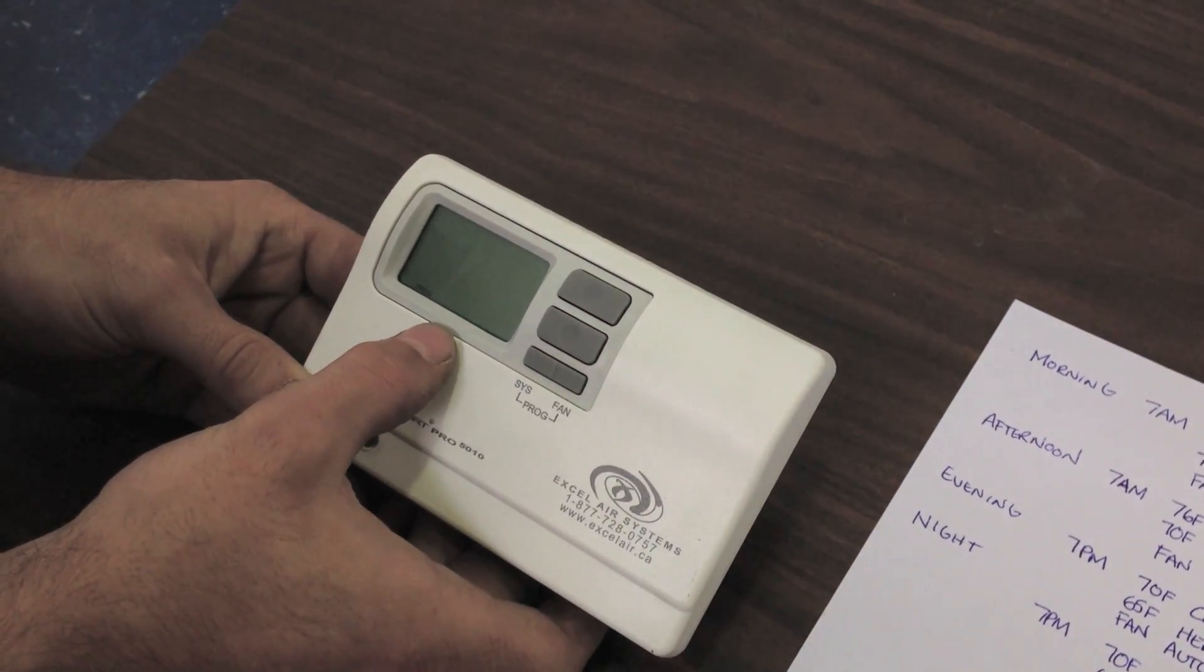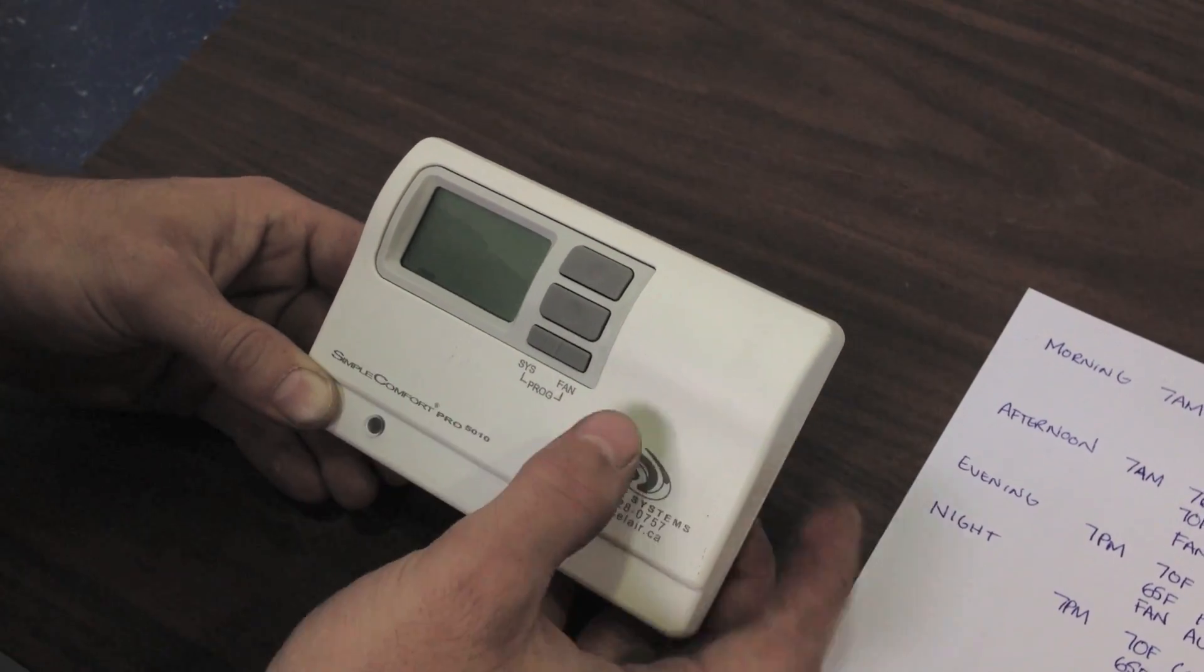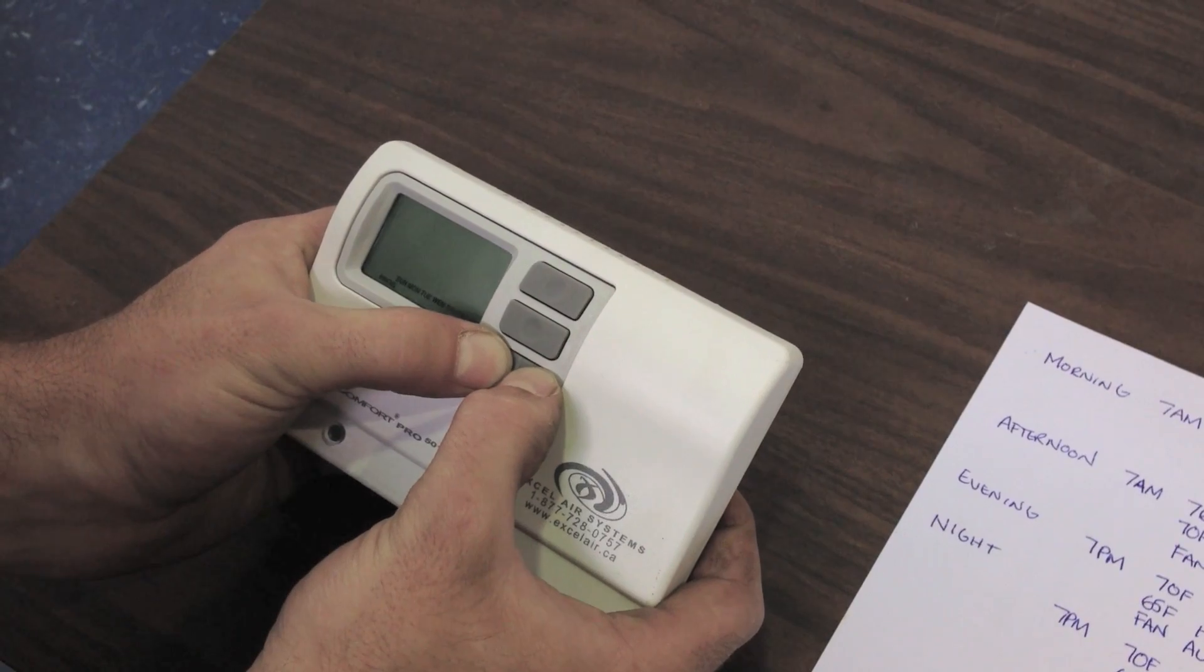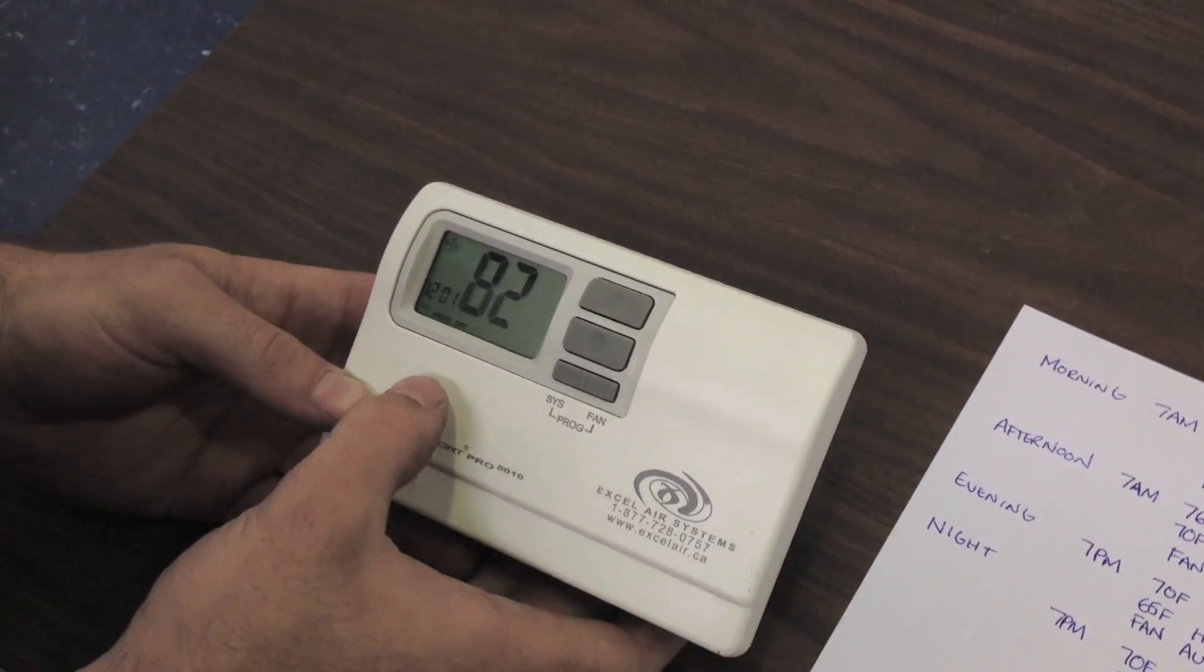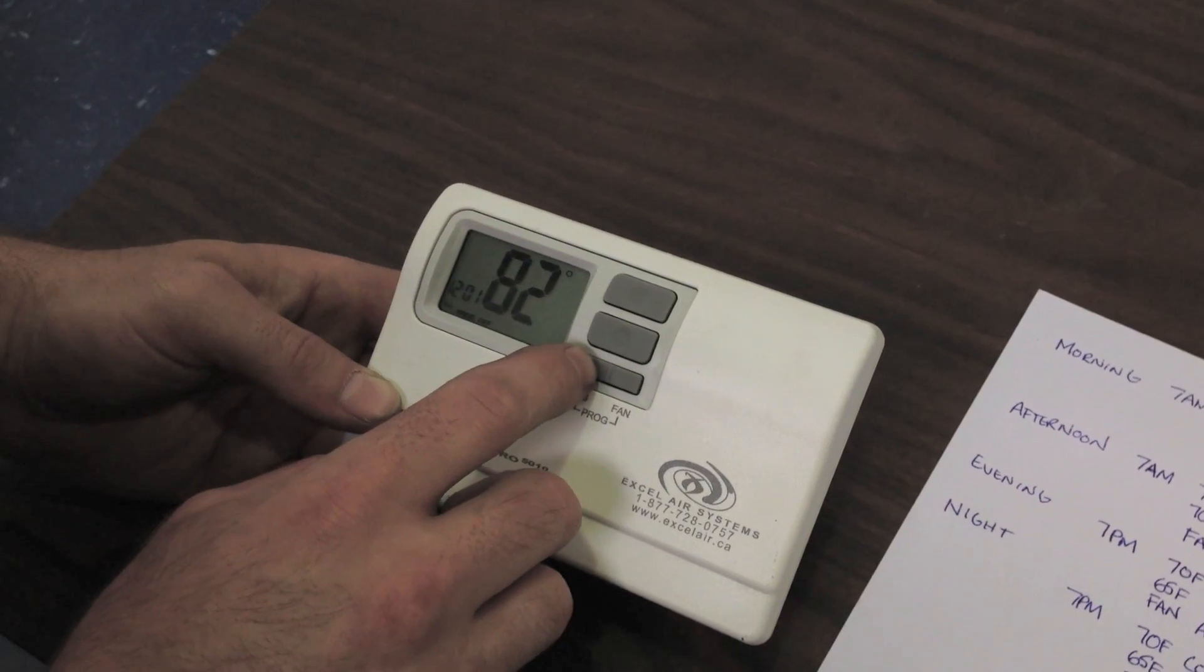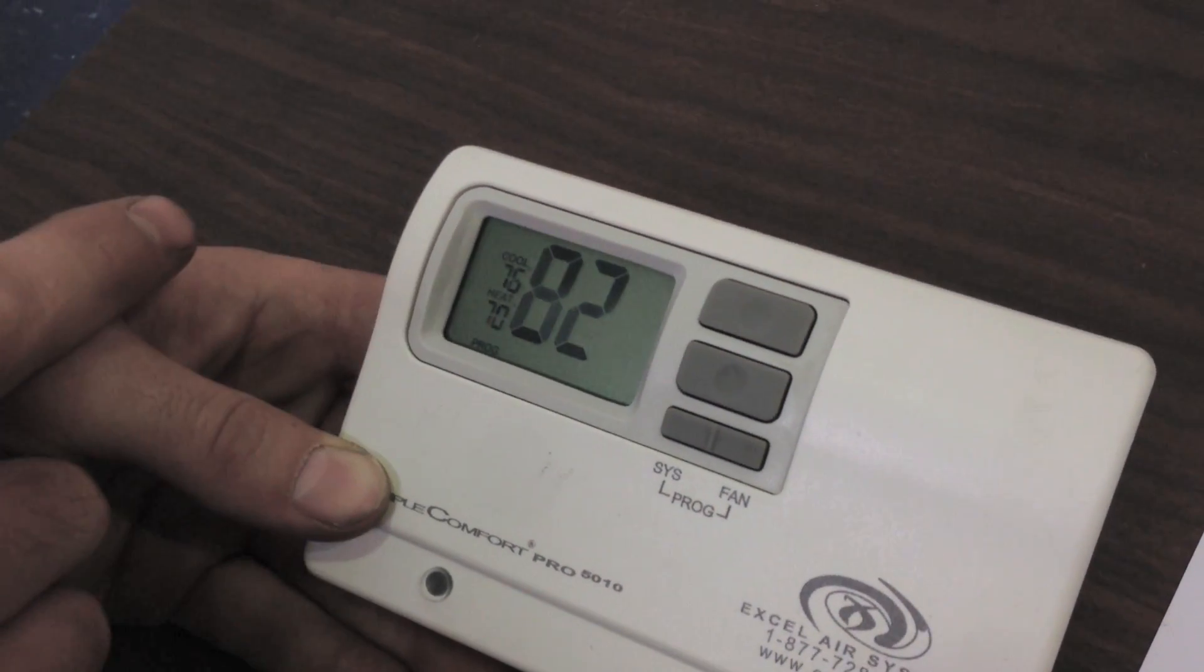And now all seven days of the week are displayed again, meaning we're done our program. To exit our program, we're going to push system and fan at the same time, hold it. We're going to hold it until the screen goes back to normal. You want to push your system button until you have both cool and heat displayed.